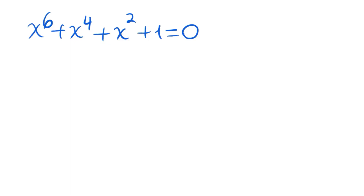Hello everyone, welcome to the channel. We have a polynomial equation of degree 6: x to the power of 6 plus x to the power of 4 plus x squared plus 1 is equal to 0. We will solve this equation for all six roots.